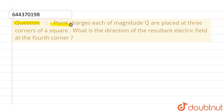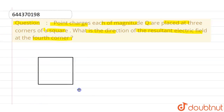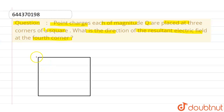This given question is: point charges each of magnitude capital Q are placed at three corners of a square. What is the direction of the resultant electric field at the fourth corner? So let us suppose this is the given square, and at only three corners the charge is placed — here plus Q, here also plus Q, and here also plus Q.